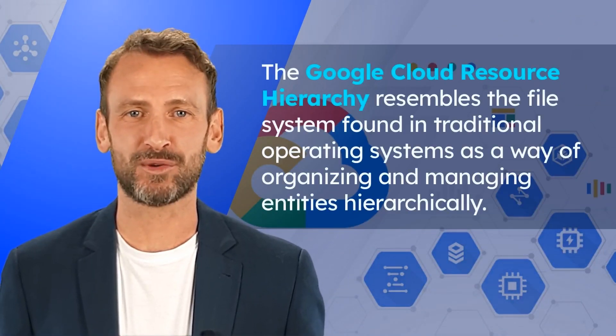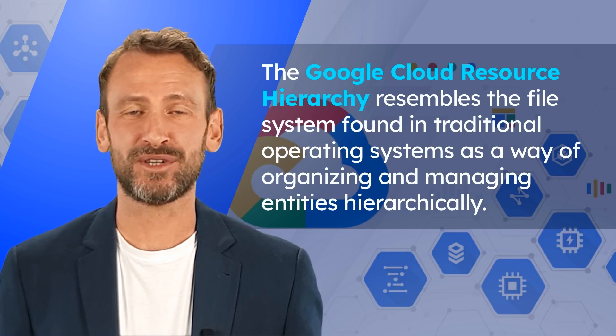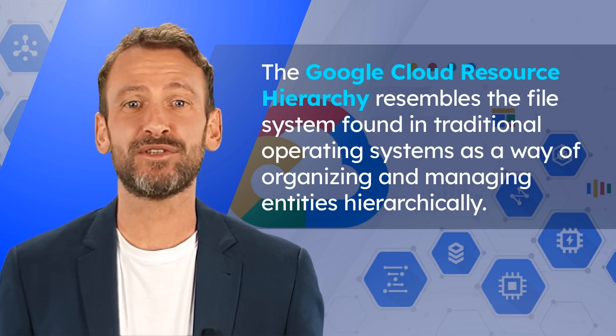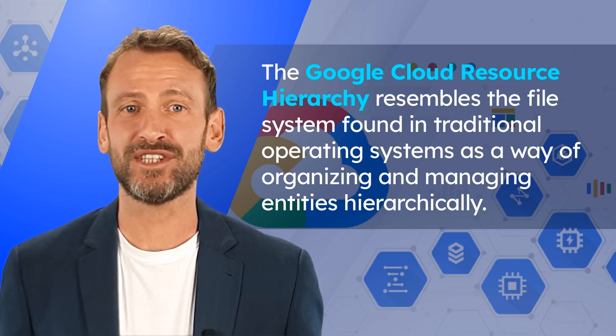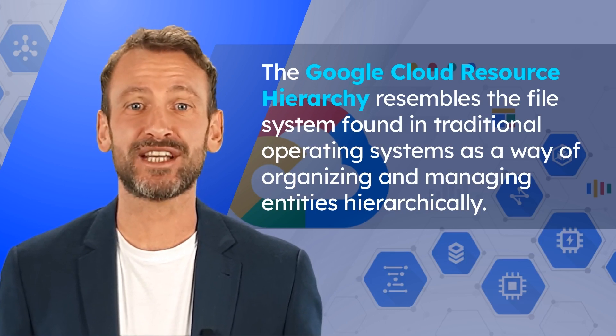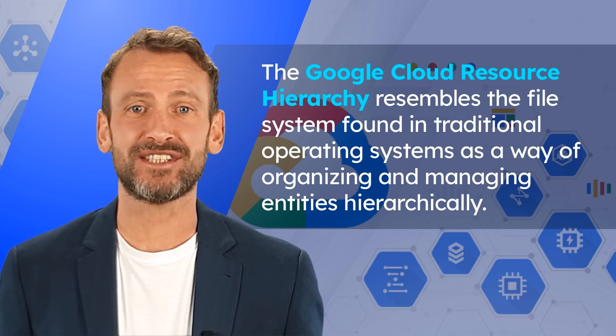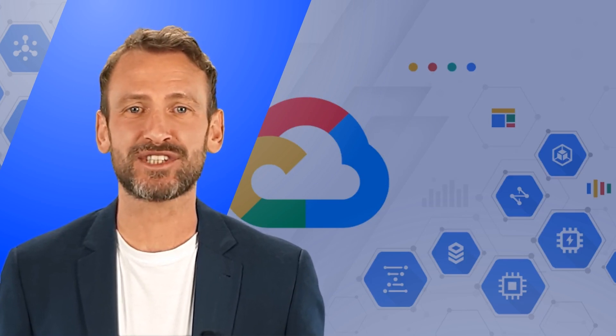Google Cloud resources are organized hierarchically. All resources except for the highest resource in a hierarchy have exactly one parent. At the lowest level, service resources are the fundamental components that make up all Google Cloud services. Examples of service resources include Compute Engine Virtual Machines (VMs), Pub/Sub Topics, Cloud Storage Buckets, and App Engine Instances. All these lower-level resources have project resources as their parents, which represent the first grouping mechanism of the Google Cloud resource hierarchy.